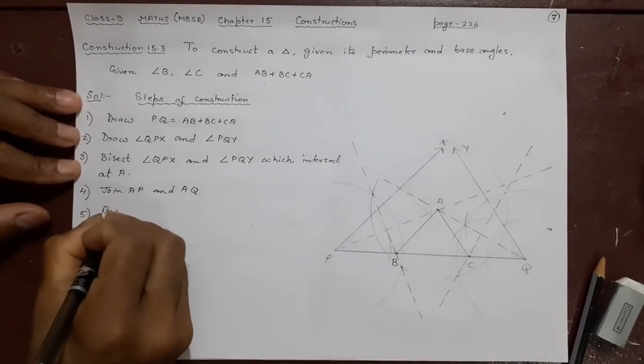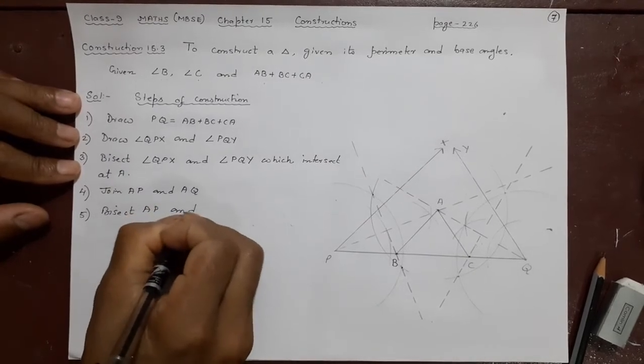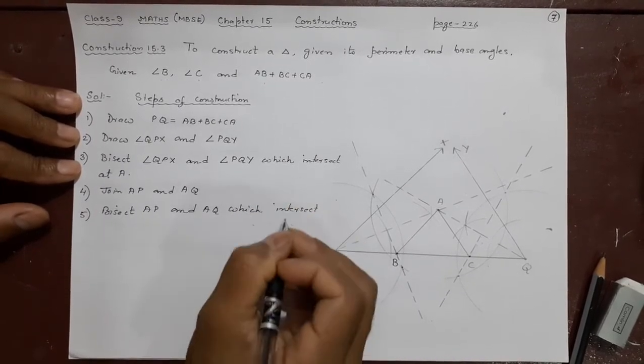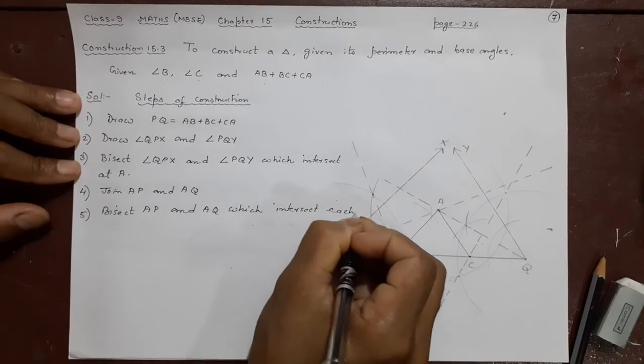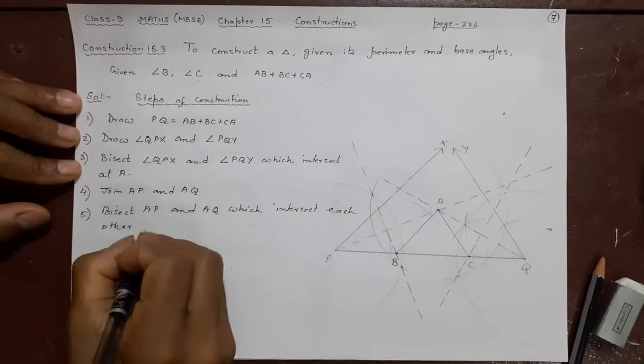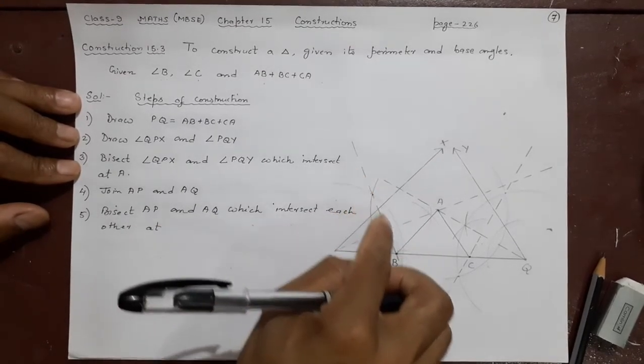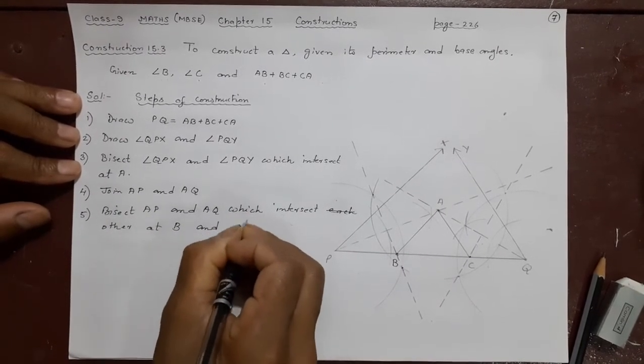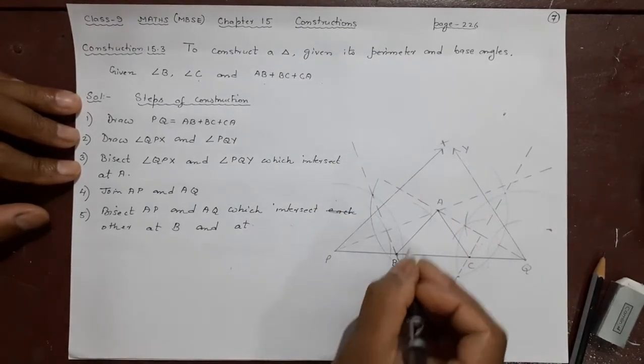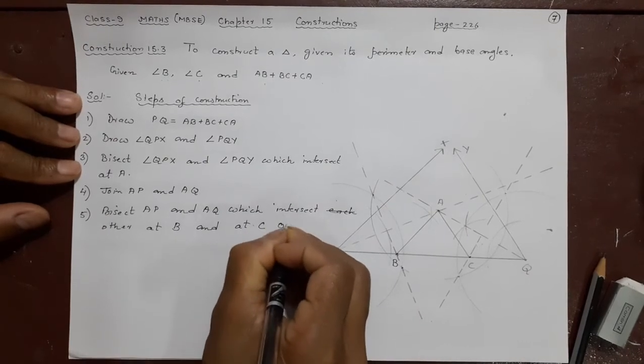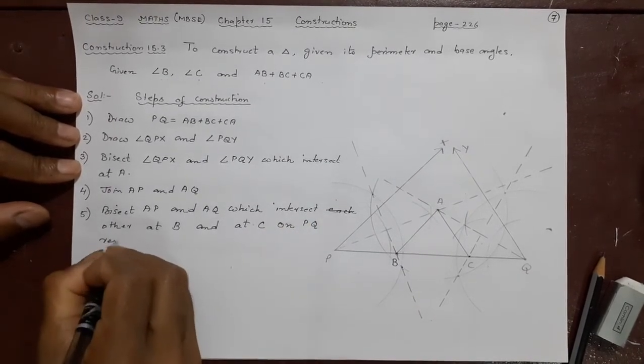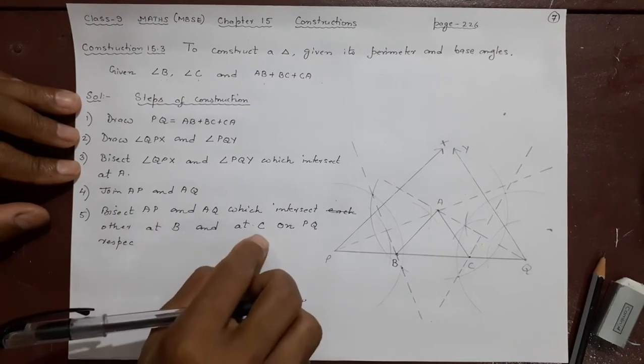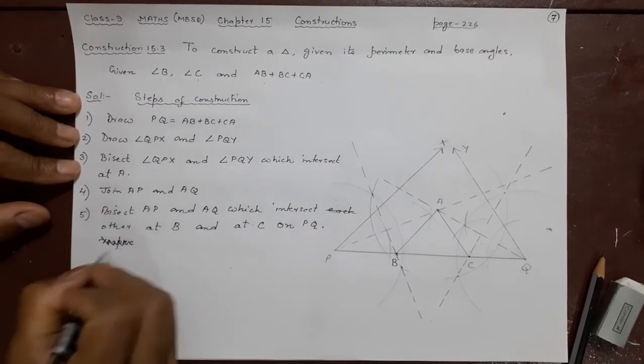Number five, bisect AP and AQ which intersect, not each other, at B and at C. This will intersect at B, this will intersect at C on PQ respectively. Respectively means B first. The first one which is for B, second one is for C. I'll write this. Like this is enough.